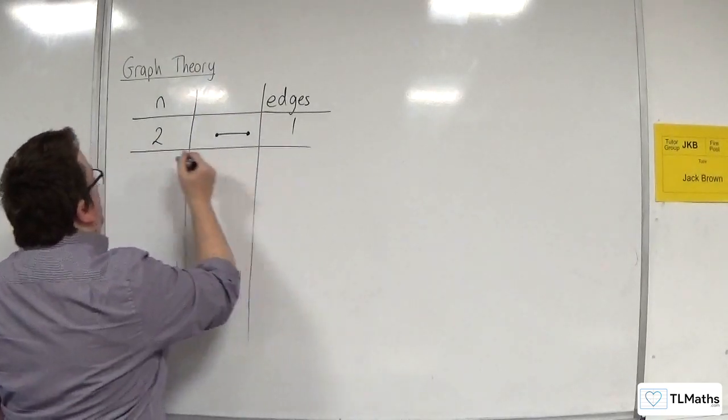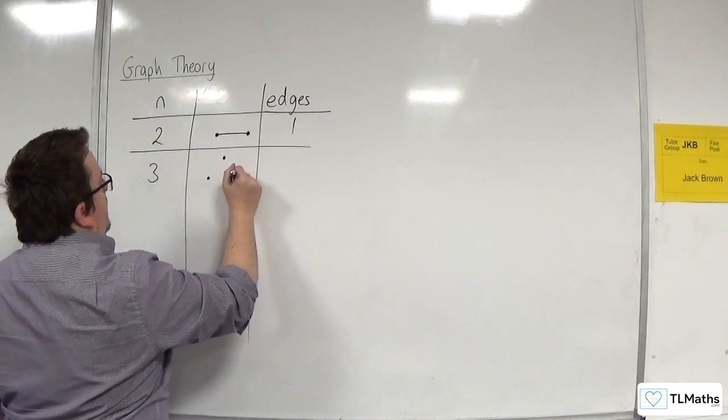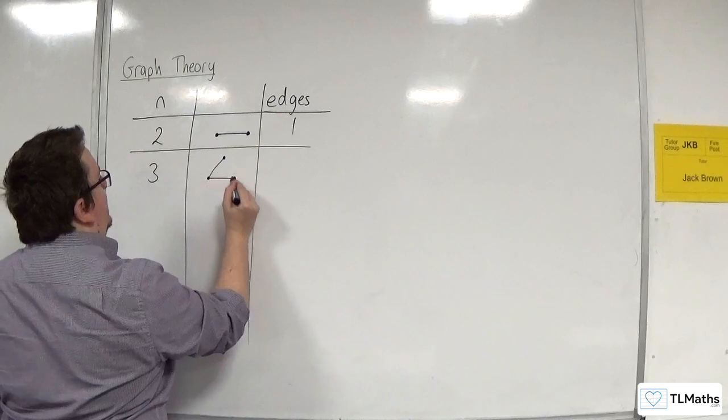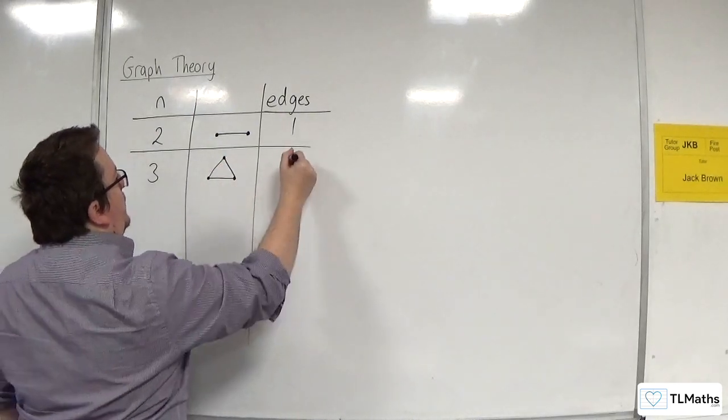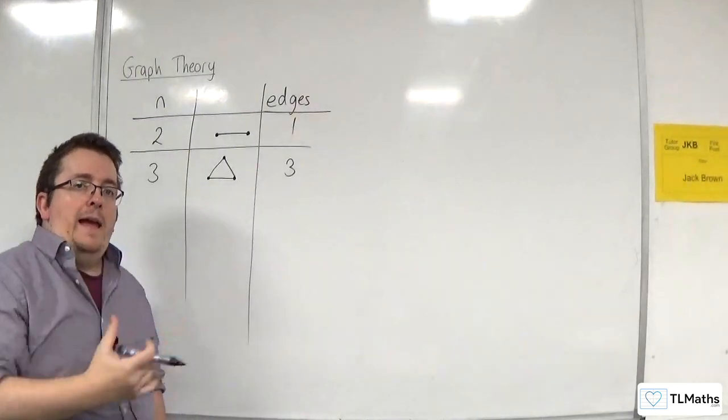Now, if n is 3, then you would have three nodes, or vertices, and each one is directly connected to the next one. And so, in total, there are three edges for n being 3.